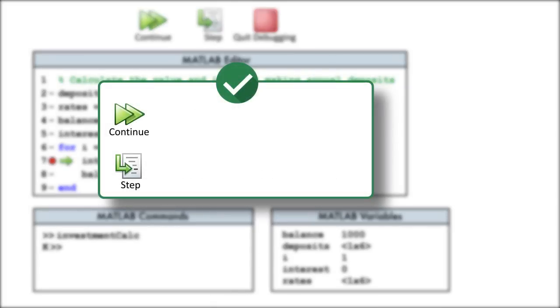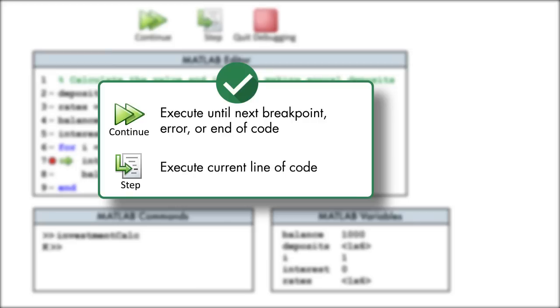We have two options for continuing code execution. We can use the Continue button, which will execute code until another breakpoint is reached, an error occurs, or all the code is executed. Or, we can use the Step button to execute a single line of code.